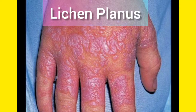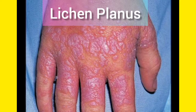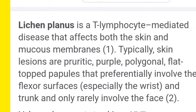What is Lichen Planus? You can see these rashes which have developed on the surface of the hand. These are very itchy, pruritic rashes, purple in color, and they have a polygonal shape. Lichen Planus is a T-lymphocyte mediated disease — always remember this.